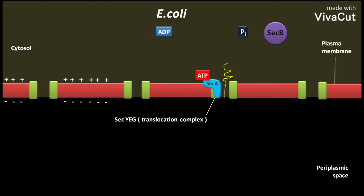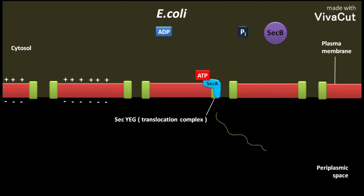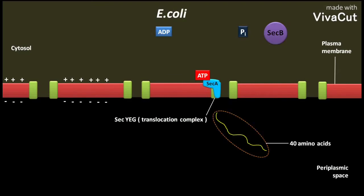This insertion again forces the next stretch of 20 amino acids of the polypeptide to be exported through the translocation complex. So in this example, the exported protein is about 40 amino acids in length.